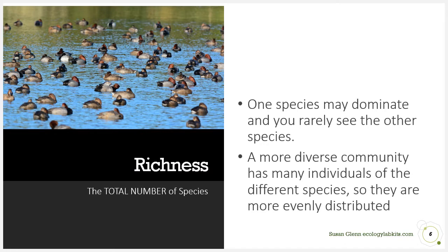One measure of how diverse a community is is species richness — simply the total number of species. If you're adding up how many different species are in a flock of ducks, that's species richness. But it doesn't take into account the relative dominance of some species over others. A more diverse community has individuals more evenly distributed — instead of 90% being one species and 1% all the others, you might have 30% of each species.